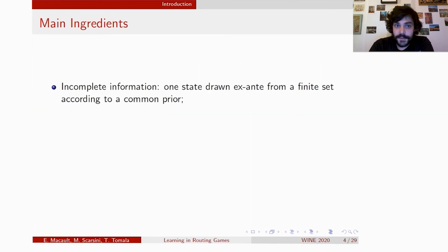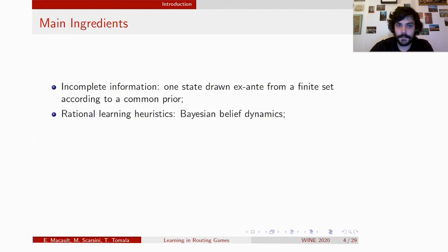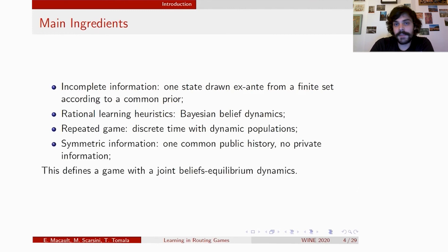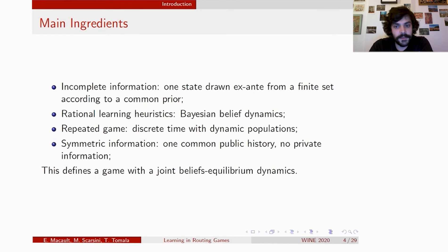To model this, we include the following elements. First, we consider a model of incomplete information. There will be one state of the world, drawn ex-ante from a finite state space according to a commonly known prior distribution. Then we consider rational learning heuristics, in that we are interested in the evolution of a Bayesian belief. We consider a repeated framework — our game will be played at discrete time steps using dynamic populations, where from one stage to the next a new player set will be drawn. Finally, we consider a model of symmetric information: there is one common public history and every bit of information is accessible by everyone, so there is no private information.